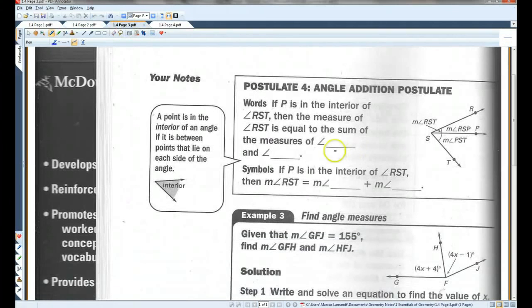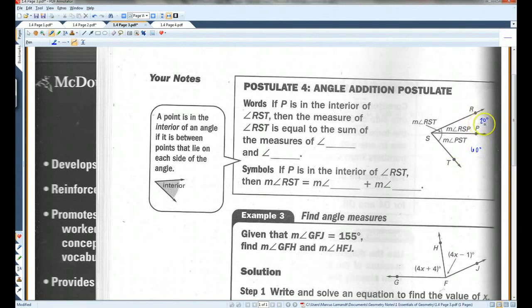Postulate four, angle addition postulate. If P is in the interior of angle RST, then the measure of RST is equal to the sum of the measures RSP and PST. So basically, if this angle here is, I don't know, 20 degrees, and this over here is 60 degrees, then the whole thing would be 80. You could just add these two angles together to get the big angle.